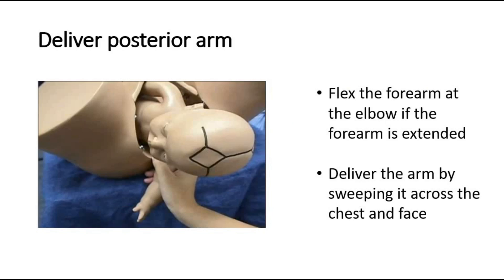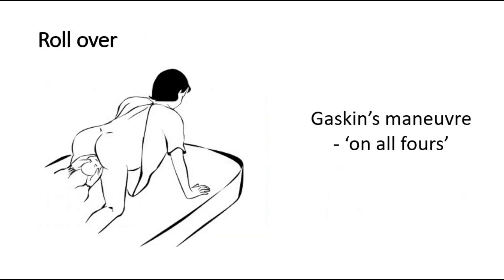Next is to deliver the posterior arm by flexing the forearm at the elbow if the forearm is extended, then delivering the arm by sweeping it across the chest and face. The following step is to ask the patient to roll over — this position is called Gaskin's maneuver, also known as the all-fours position.